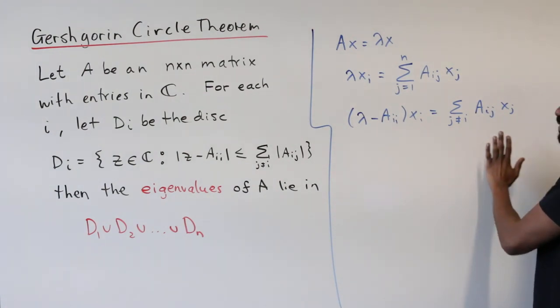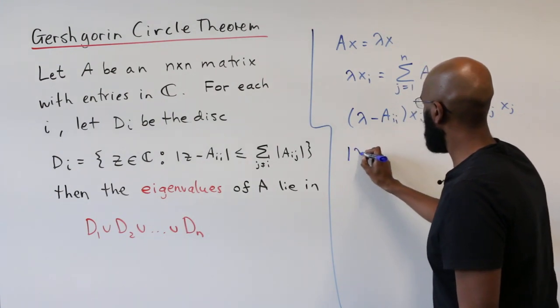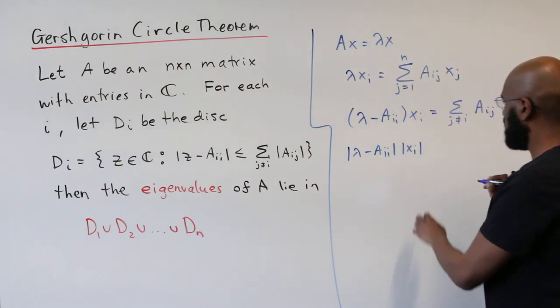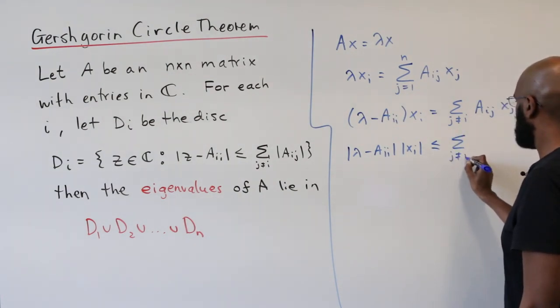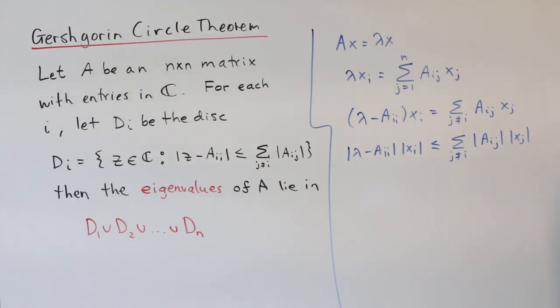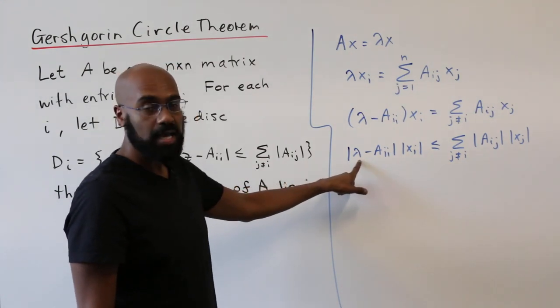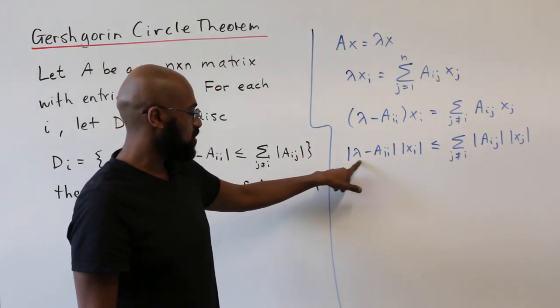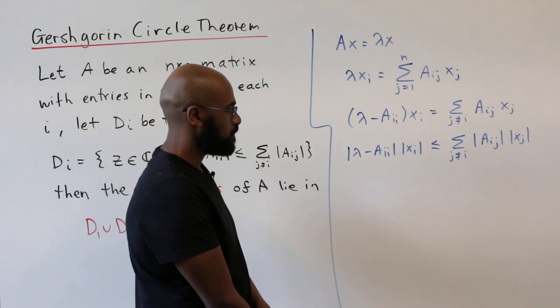If we do that, we'll have lambda minus A i-i times x i is the sum j not equal to i of A i-j x j. Alright. Now, if we look in terms of the modulus of these quantities, we'd get as a consequence that lambda minus A i-i in modulus times the modulus of x i is, by the triangle inequality, less than or equal to the sum j not equal to i of A i-j in modulus times x j in modulus. Alright.